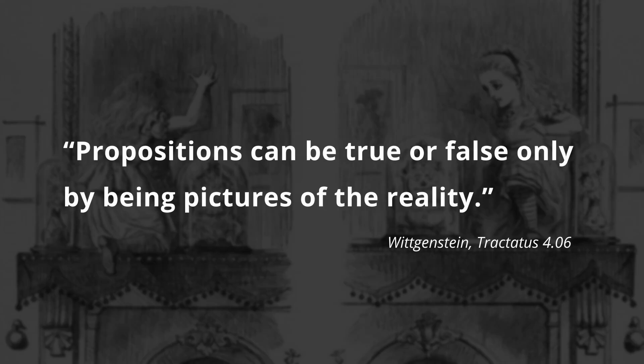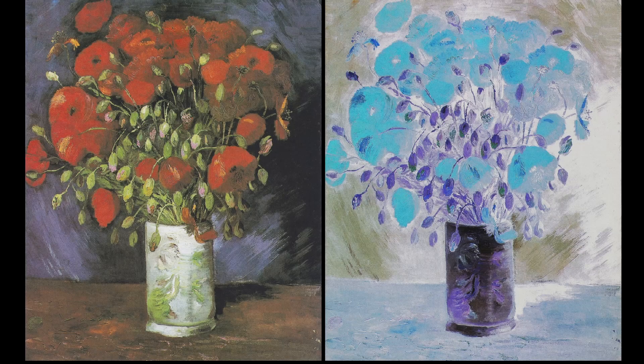Propositions can be true or false only by being pictures of reality. When we look at propositions and call them true or false, a sentence can describe a red flower as being red — it is a true sentence. But I can also say the flower is blue, green, yellow, and so on — these sentences are false. Again, there seems to be no symmetry here: only one sentence is true, while there is a myriad of sentences about the same thing that are false. This is easily explained in the theory of imagery, or representationalism. People are imperfect beings — when they try to create a mirror image, they fail all the time.